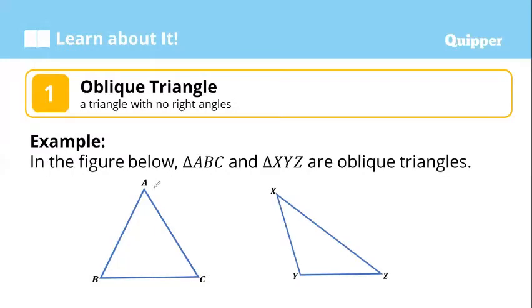As you can see, we have for ABC three acute angles. And for XYZ, we have two acute angles with one obtuse angle. There is no right angle for these triangles.